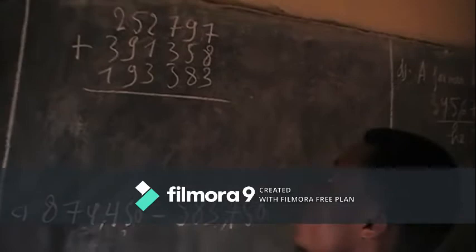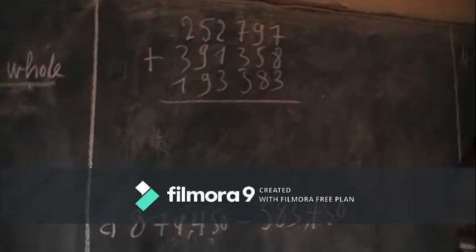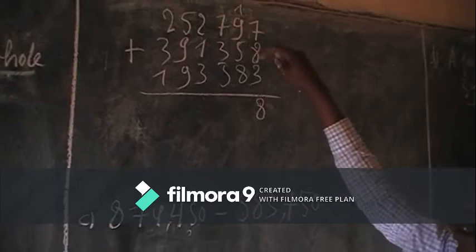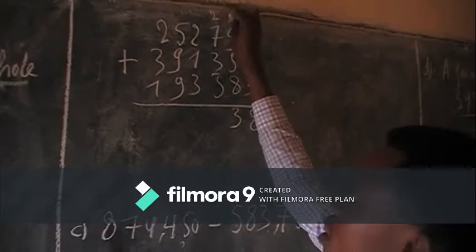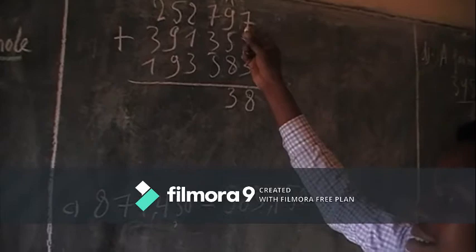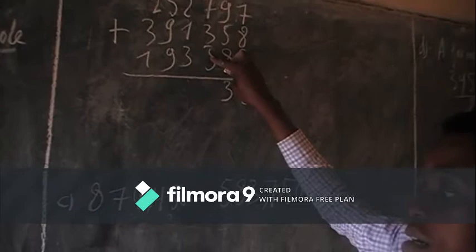7 plus 8 is equal to 15. Then 15 plus 3 is equal to 18. Write 8 and carry 1. 1 plus 9 is equal to 10. 10 plus 5 is equal to 15. Then 10 plus 15 plus 8 is equal to 23. Write 3 and carry 2. Then 2 plus 7 is equal to 9. 9 plus 3 is equal to 12. Sorry, it is 3.